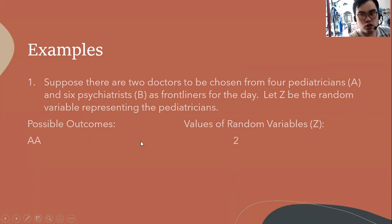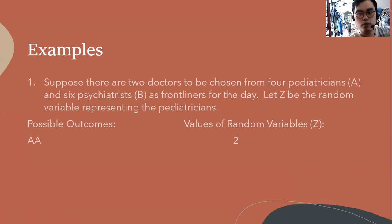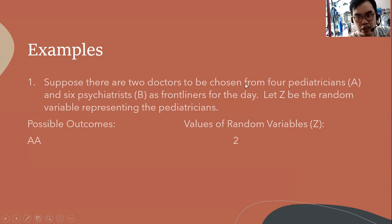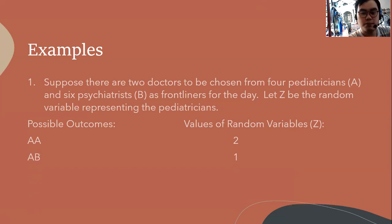The first possible outcome is AA — we have chosen two pediatricians. The value of the random variable Z is two because Z represents the pediatricians. The second outcome AB means we have chosen one pediatrician and one psychiatrist, so the value of the random variable is one.